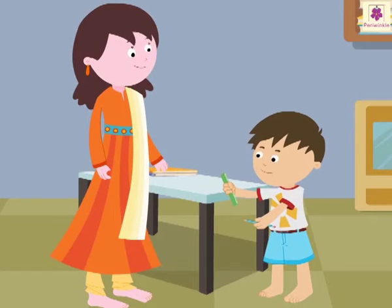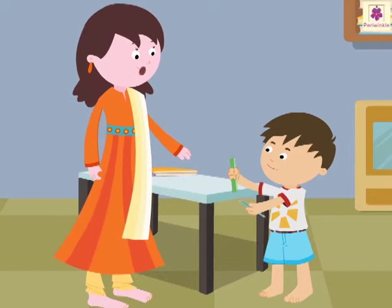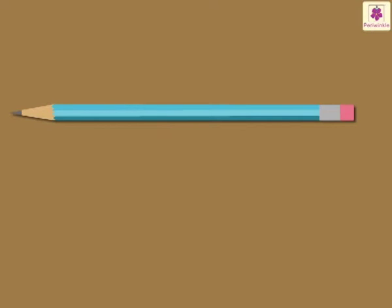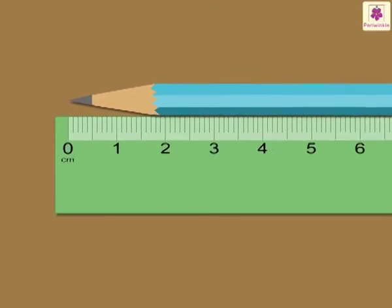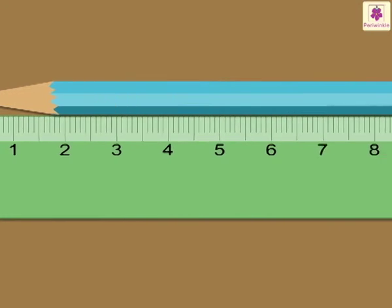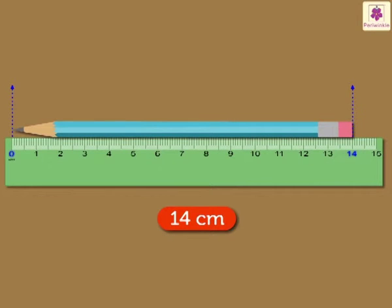Mom, can I measure the length of this pencil with this ruler? Yes, of course. Let me show you how. Keep the pencil on the table. Keep the ruler beside it. You have to take care that one end of the pencil coincides with the zero mark of the ruler. Now, look at the other end of the pencil. Can you tell me which number it coincides with on the ruler? 14. So, its length is 14 centimeters.